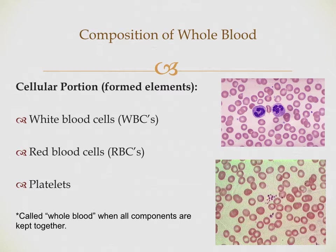Looking at the cellular portion of the bloodstream: white blood cells make up the main immune defense system — a much smaller portion than red blood cells, but extremely important for protecting the body. Red blood cells make up about 45% of total blood volume. Platelets make up less than 1% but are quite important as the first portion of the clotting mechanism. When we look at white cells, red cells, and platelets all together, that's called whole blood.